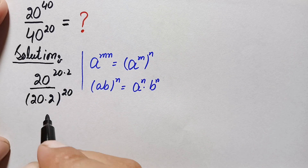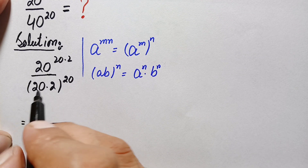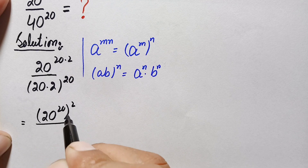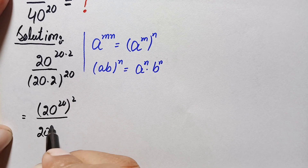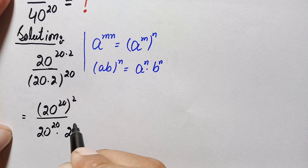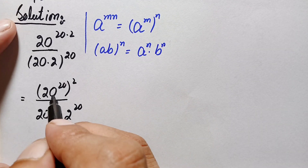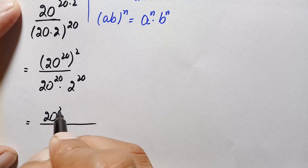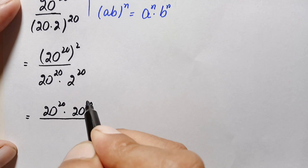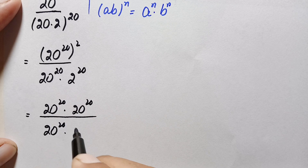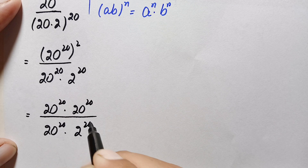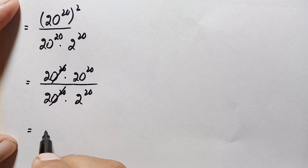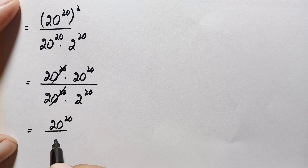Using these two identities, the numerator becomes 20 raised to the power 20, whole squared. The denominator becomes 20 raised to the power 20 times 2 raised to power 20. Expanding the square in the numerator gives 20 raised to power 20 times 20 raised to power 20. We then cancel one factor of 20 raised to power 20 from numerator and denominator, leaving 20 raised to power 20 divided by 2 raised to power 20.